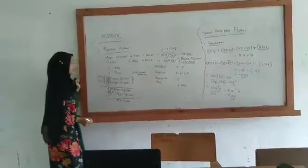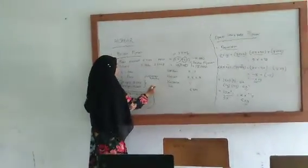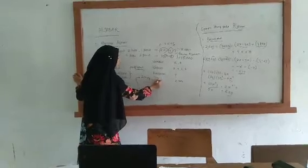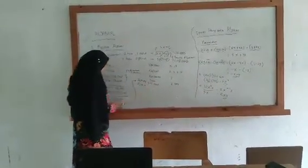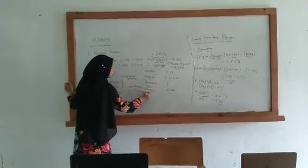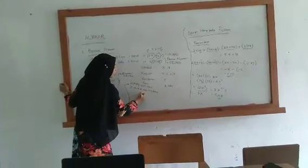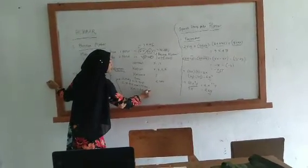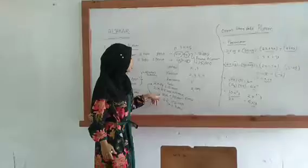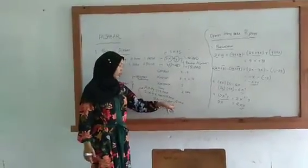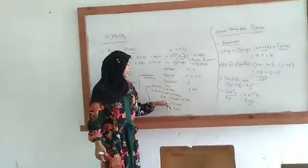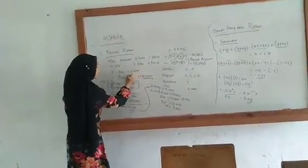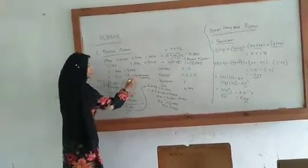Ini langsung saja kita substitusi ke persamaan pertama. 2X tambah Y sama dengan 12,000. Masukkan nilai Y berapa tadi, 6,000. 2X sama dengan 12,000 dikurang 6,000. 12,000 dikurang 6,000 berapa? 6,000. Berarti X sama dengan 6,000 dibagi 2, jadi 3,000. Berarti harga satu buku adalah 3,000 dan harga satu pena adalah 6,000.